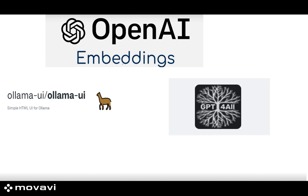In the last call, we discussed OpenAI embeddings briefly and the overall flow for implementing them in your organization. We understood how you create chunks, embed them into a vector database, and then how prompts are provided and converted into embeddings for search.